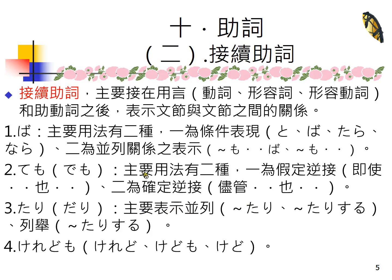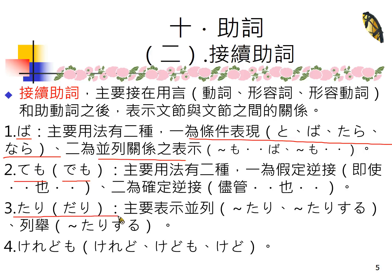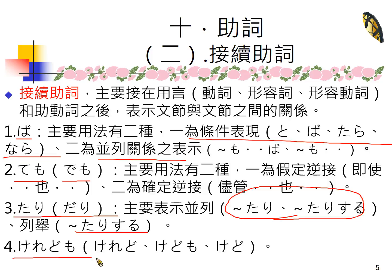接续助词其实我们有分了很多单元来做介绍。第一个介绍了ば，ば是条件表现的一种，这四个条件表现我们做了整体的比较。然后ば另外还有并列关系的表示。ても表示即使怎么样也怎么样，要连着音就要连着音。たり、たり表列举，通常是「たり、たりする」的句型，但有时候会省略前面一个たり，「たりする」也是有的。